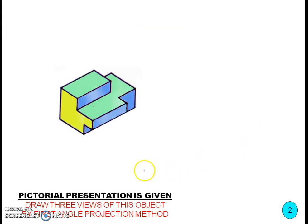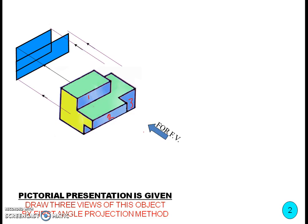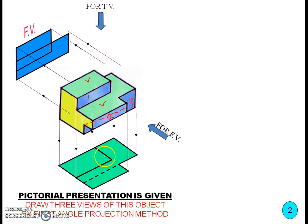Moving to the next problem — another pictorial representation of a machine element. When looking from the front, we can see three planes in the front view. In the top view, we can see two planes. However, in this case there is a hidden edge that we cannot see from the top, but we still have to represent it in the top view. The hidden edge is represented as a dashed line — hidden edges are shown as dashed lines.